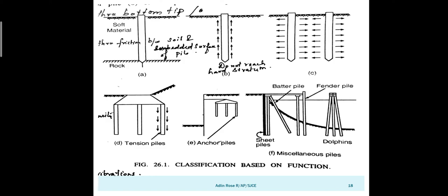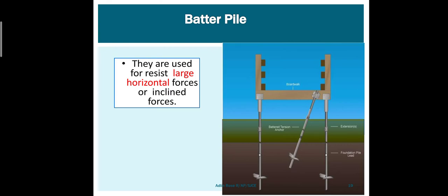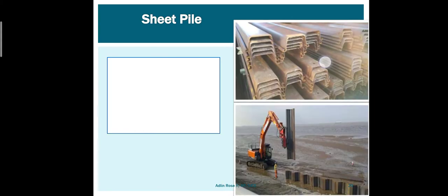Batter pile means we provide inclined piles instead of vertical piles. This is used in offshore platforms and waterfront structures because horizontally the water pressure is very high, so we go for batter piles.